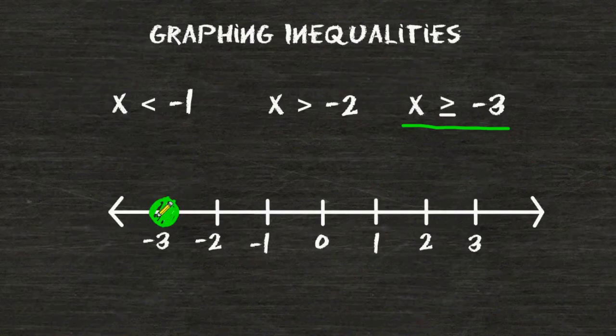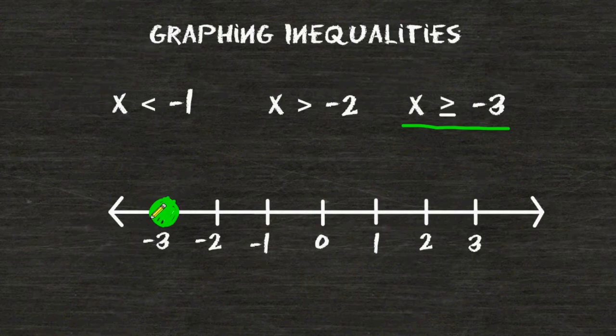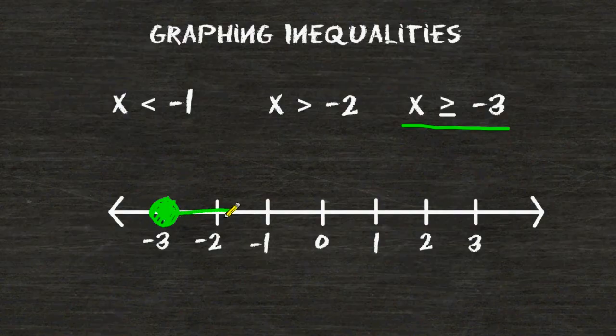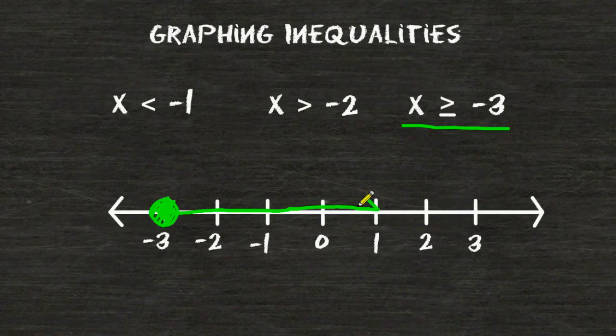Because the inequality states that x has to be greater than negative 3 or equal to negative 3, that means negative 3 is a possible solution to this inequality. And we still must draw an arrow moving to the right of negative 3 because that's where all of the values are greater than negative 3 on the number line.